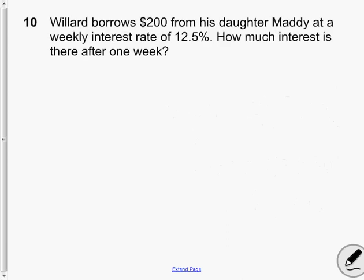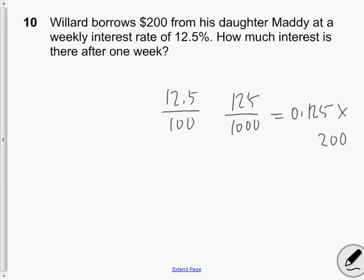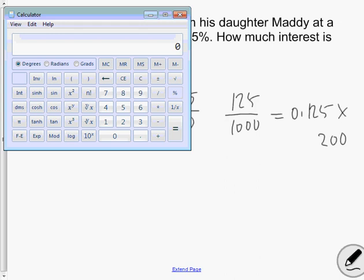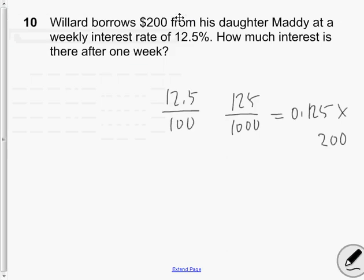Question 10. Willard borrowed $200 from his daughter, Maddie, at a weekly interest rate of 12 and 1 half percent. How much interest is there after one week? So again, same process as the last question. 12 and 1 half percent. We multiply that by the loan of $200. 12 and 1 half percent of $200 means that interest-wise I would owe Maddie $25 interest after week one. Which means after one week I would have to repay Maddie $225.